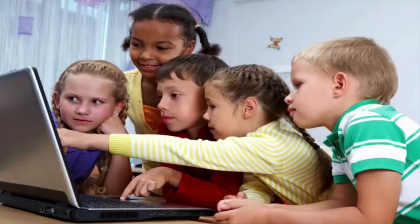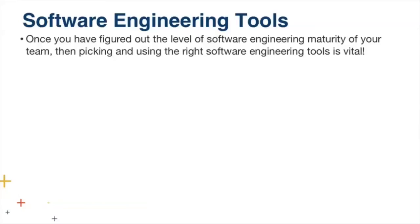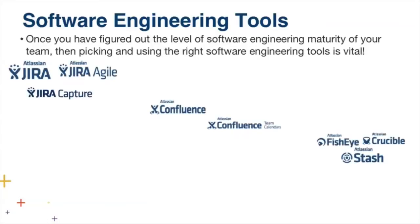Before we get to the process, let's talk about the tools. Tools are key to helping deploy your process. If you don't pick the right tools, it will affect how your process gets deployed and whether there's a failure or success in that deployment. At YP Canada we use everything from Jira, Jira Agile, Confluence, team calendars, all the way down to code reviews and Stash. I've been using Jira for about 10 years — I was really one of the early adopters.